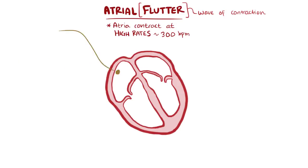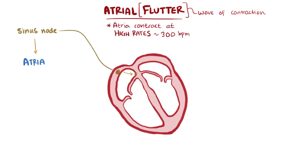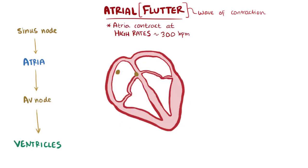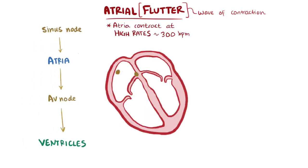Normally, an electrical signal is sent out from the sinus node in the right atrium. It then propagates out through both atria super fast, causing the atria to contract. Usually that signal moves in one direction, from the atria to the ventricles through the AV node. It then moves down to the ventricles and causes them to contract shortly after. After each ventricular contraction, the ventricle has to wait for another signal from the sinus node.